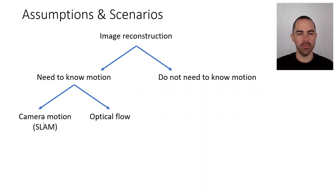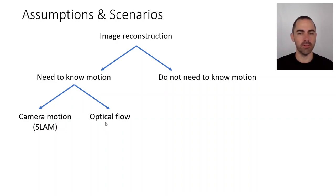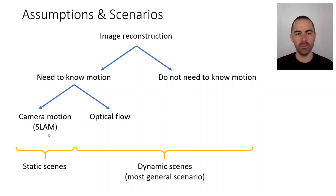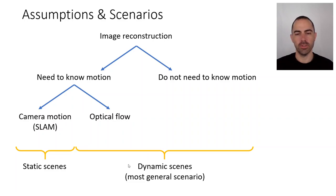Among those that need to know the motion, some require ego motion — three or six degrees of freedom camera motion — via visual odometry or SLAM. Others, like the one from Patrick Barua in 2016, only need to know the apparent motion, i.e., optical flow on the image plane. SLAM-based methods work under the assumption that you collect evidence over time and the scene is static, while methods that assume known optical flow or require no motion knowledge work in the most general scenario of dynamic scenes.